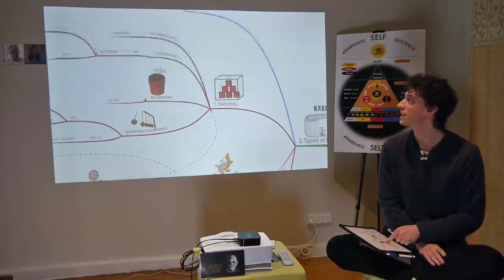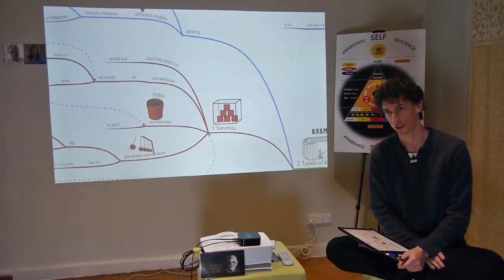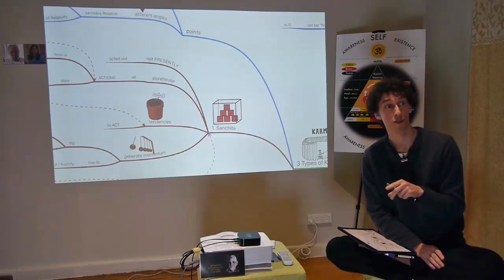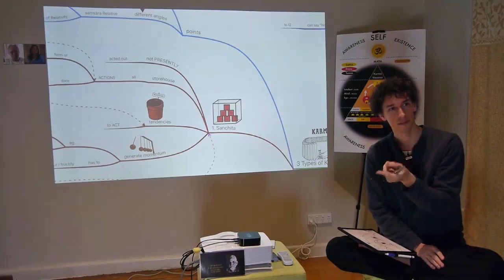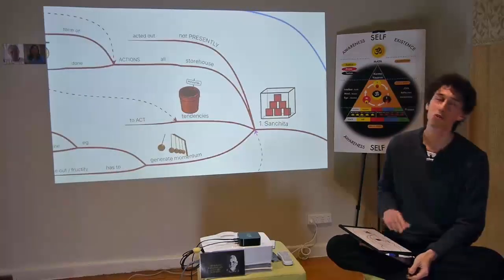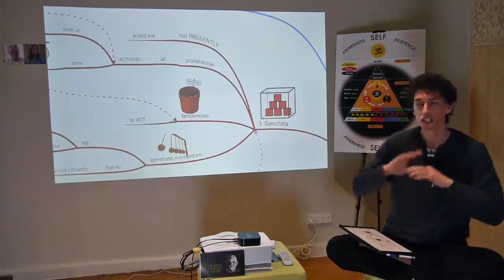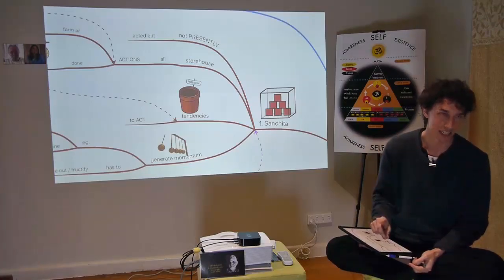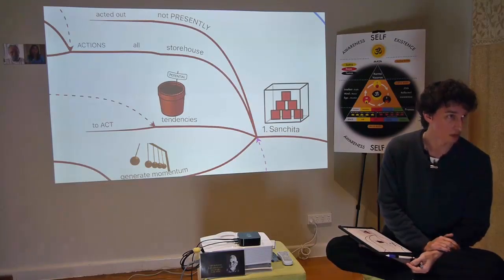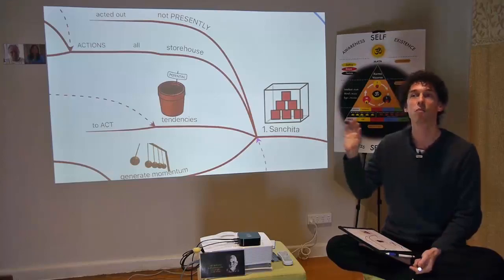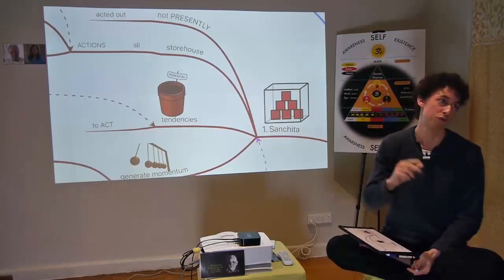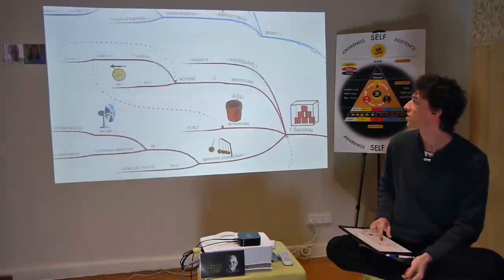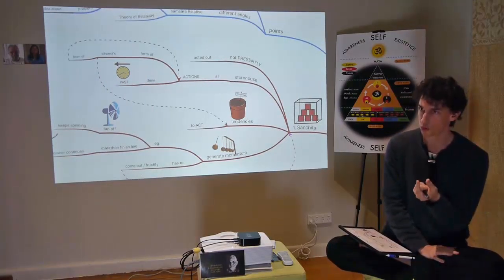The first karma is called Sanchita. As the box implies, it's a storehouse — inside the box are cubes, each representing a vasana. All your vasanas are stored in Sanchita karma. Sanchita is not presently being acted out. For example, if you like coffee but you're not drinking it right now, that's Sanchita. When you do drink coffee, Sanchita transforms into Prarabdha.